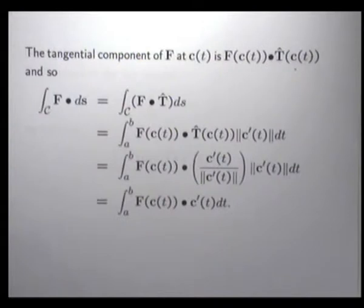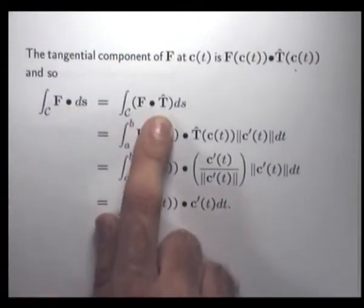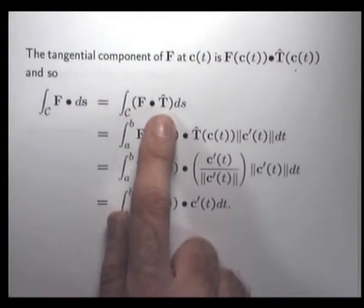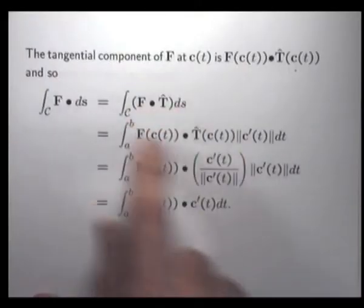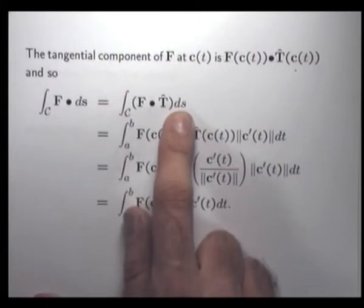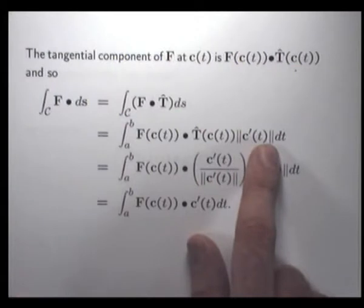So how do we actually compute this line integral? What's the actual computation involved? From here to here, this is just the definition of the line integral. Now, the tangential component of F along c(t) is just this dot product. So I'm going to replace what's in brackets here with this. And we know that the ds element is just the magnitude of c dash dt.